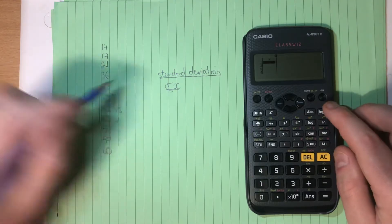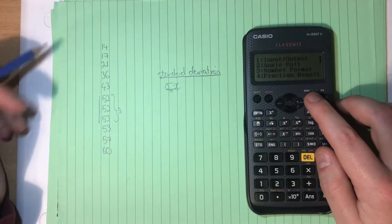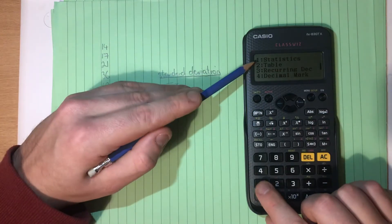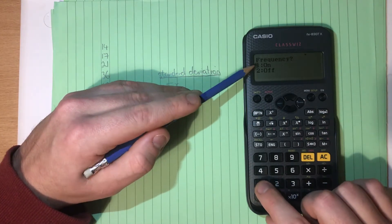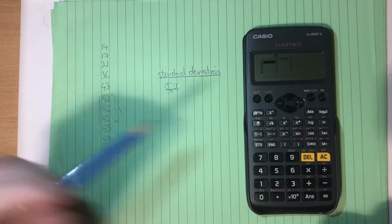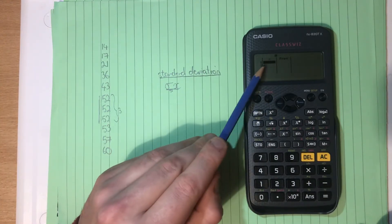So to do that, we go Shift, Setup. And we then scroll down until we get to Statistics up here, and we select number 1. And we want to turn Frequency on. So we select number 1 again, and we now see that we have a second column up here called Frequency.